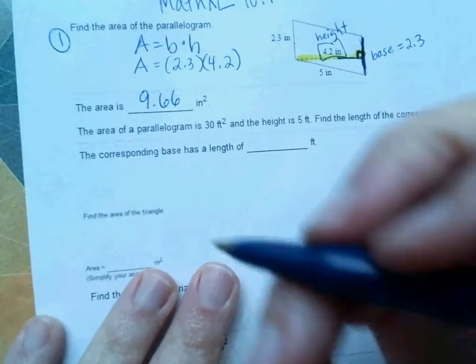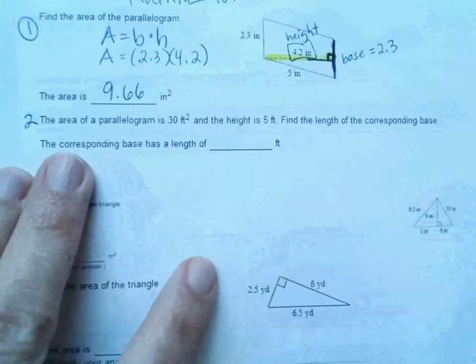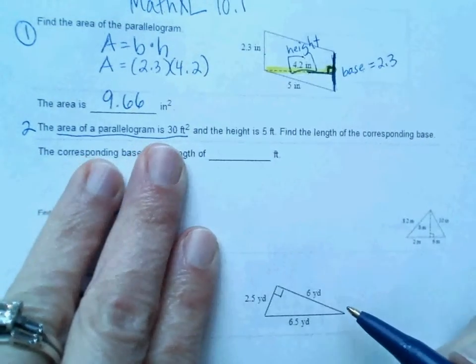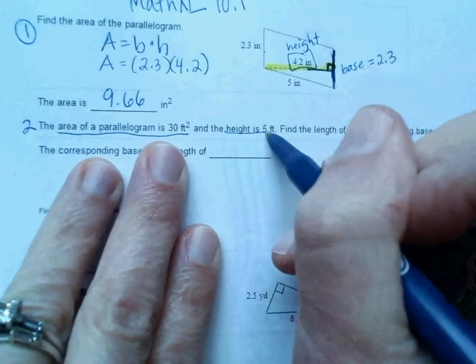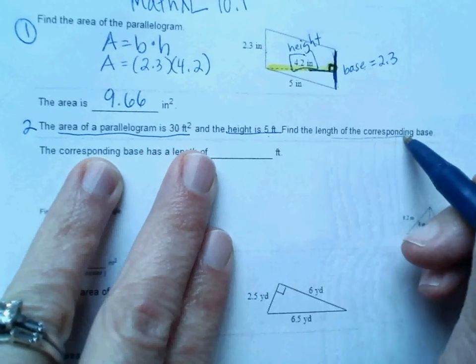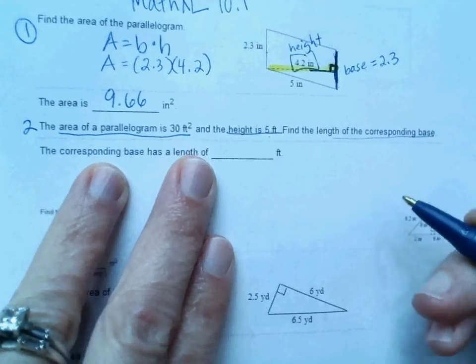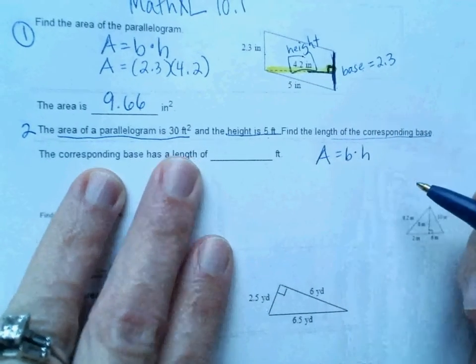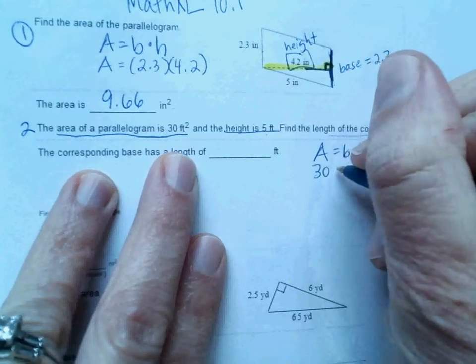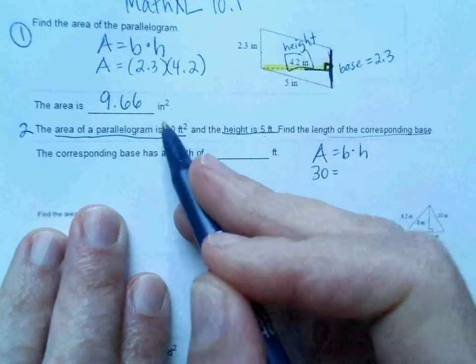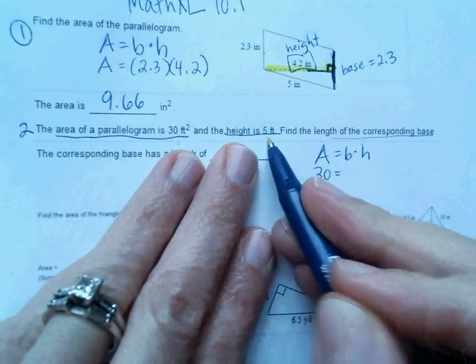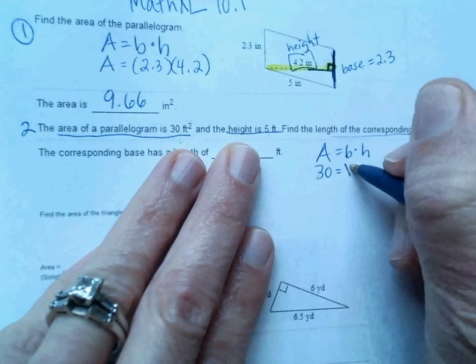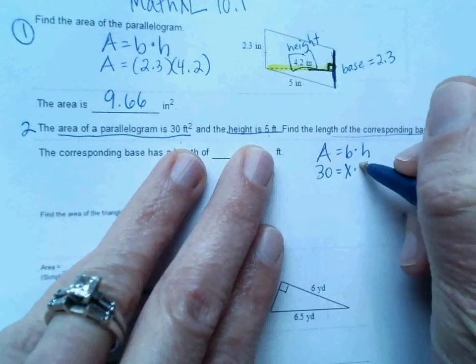They tell us the area of a parallelogram is 30 square feet, and the height is 5. Find the length of the corresponding base. So this one you're going to work backwards. Area equals base times height. So for area I'm going to put 30 because my area is 30 square feet. And the height is 5. So base, you can leave it as a B or lots of you like to just put X. X times 5.